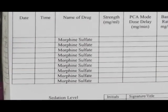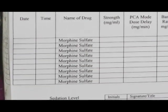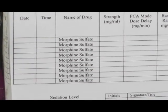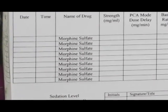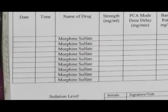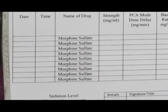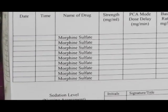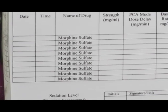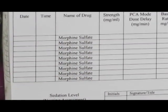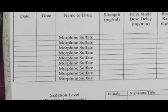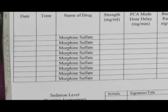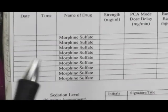The first step is to initiate the PCA record for documentation. To do this, you'll need the help of a second licensed nurse. I've positioned the PCA record here so that you can see how it looks. As you're doing this procedure, one of you will be filling out this form while watching the values on the pump, and the other nurse will be actually scrolling through the pump to find the information. So it's a process that involves two people.